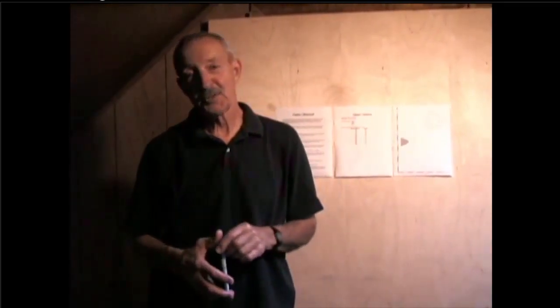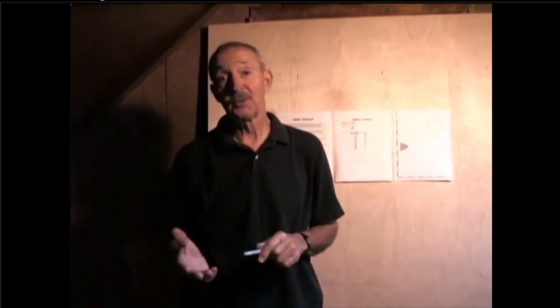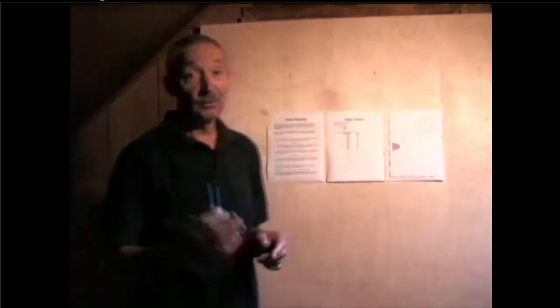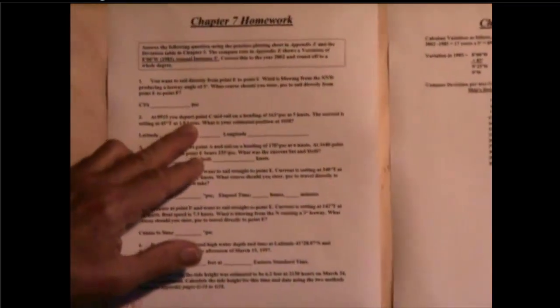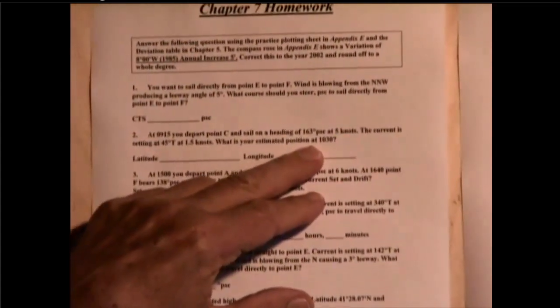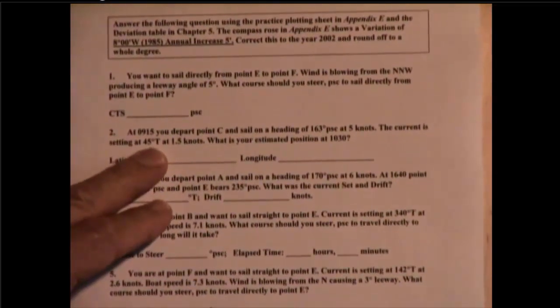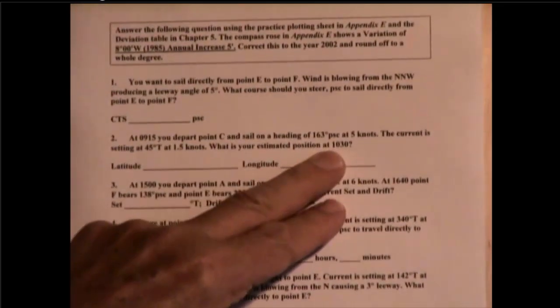This next question is chapter 7, question number 2, and it deals with determining your estimated position based on DR plus current effects. So let's read the question and then work it out. At 0915, you depart point C and sail on a heading of 163 PSC at 5 knots. The current is setting at 45 degrees true at 1.5 knots. What is your estimated position at 1030?